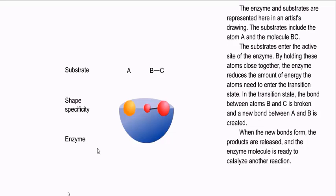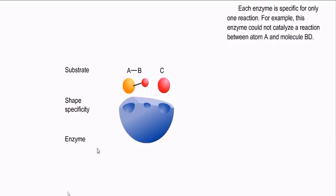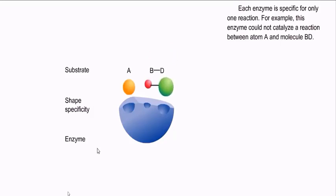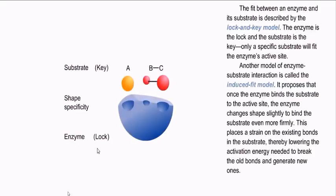In the transition state, the bond between atoms B and C is broken, and a new bond between A and B is created. When the new bonds form, the products are released, and the enzyme molecule is ready to catalyze another reaction. Each enzyme is specific for only one reaction — for example, this enzyme could not catalyze a reaction between atom A and molecule BD. The fit between an enzyme and its substrate is described by the lock and key model: the enzyme is the lock and the substrate is the key. Only a specific substrate will fit the enzyme's active site.